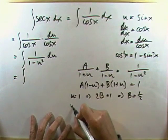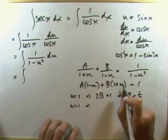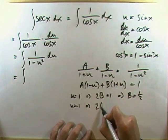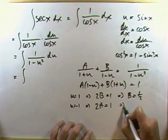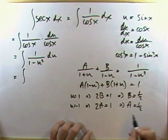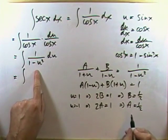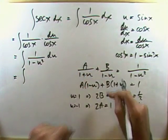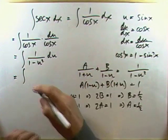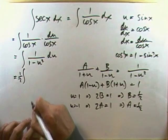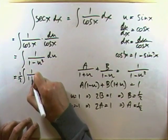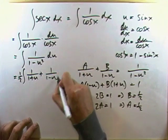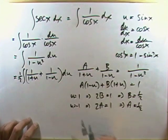And if I let u equal negative 1, the B term gets knocked out, and I've got 1 minus negative 1 equals 2, so 2A equals 1 and A is one half. So I can rewrite this. Rather than writing a half over 1 plus u plus a half over 1 minus u, I'll take the half out: a half times the integral of 1 over 1 plus u plus 1 over 1 minus u du.